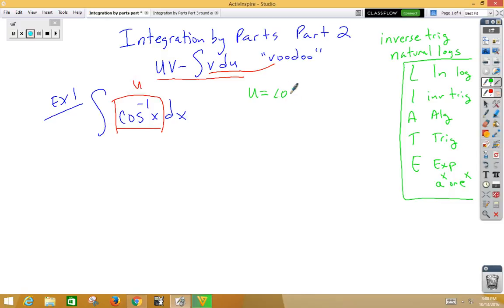So inverse trig is going to be my u. I've got inverse cosine x is my u, which means my dv is what's left over, which is dx. We need to do integrals on the right side, so when we integrate just 1dv, we get 1x. We're doing derivatives on the left side, so the derivative of inverse cosine is negative 1 over root 1 minus x squared dx.